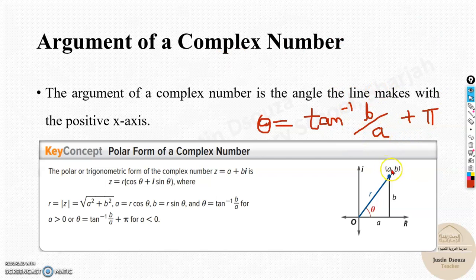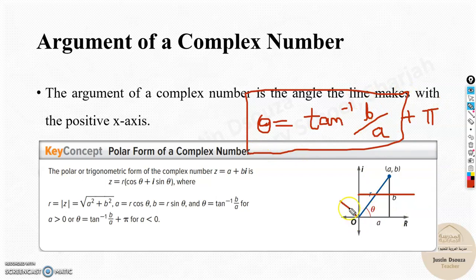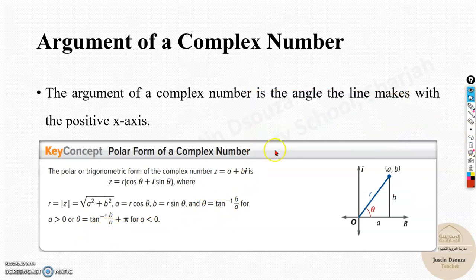So when do we add pi? If the given value of a is positive, if a is positive, it will be the right side. Then theta is tan inverse b by a. But if it goes to the other side, then you need to add pi, that is 180 degrees, to the formula. Whenever a is greater than 0, that means positive, this is the formula. If it's negative, that's less than 0, then add pi. Let us solve a couple of problems, you'll understand how easy and simple it is.